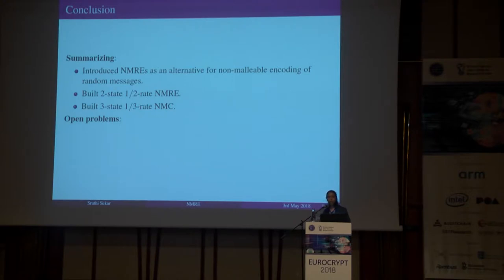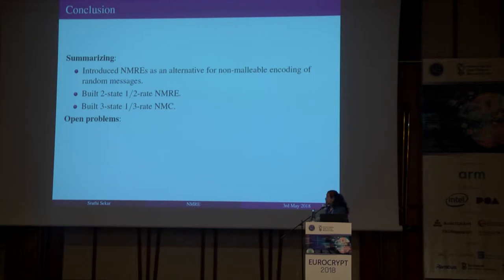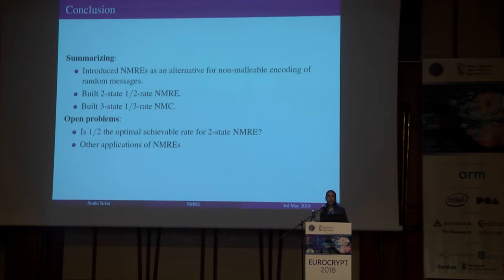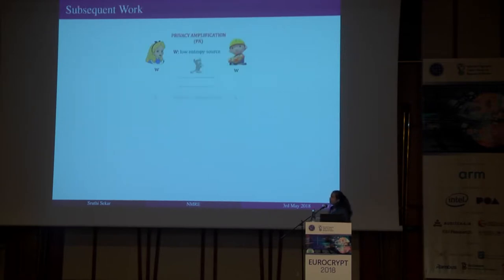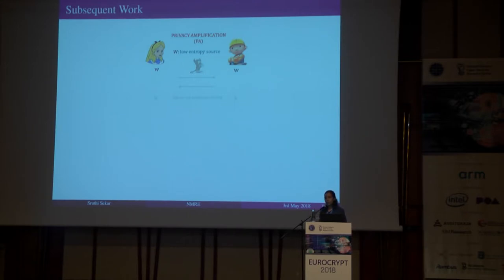Summarizing: we introduced non-malleable randomness encoders as an alternative for non-malleable encoding of random messages, built a two-state half-rate NMRE, and as an application obtained a three-state one-third rate NMC. In terms of open problems: for non-malleable codes, half is the optimal achievable rate for the two-split state family, but for NMREs it is not clear whether half is optimal — can we do better than rate one half for two-split state NMREs? It is also interesting to explore other applications of NMREs.